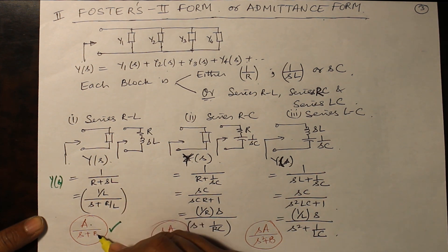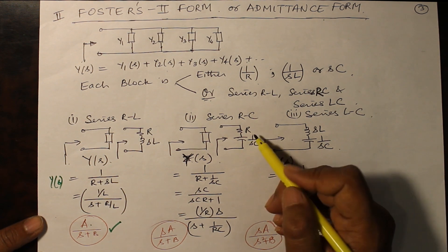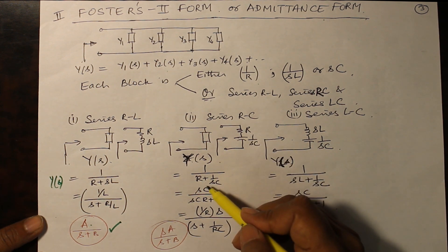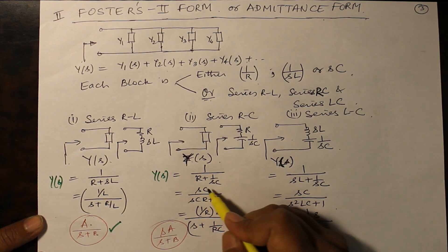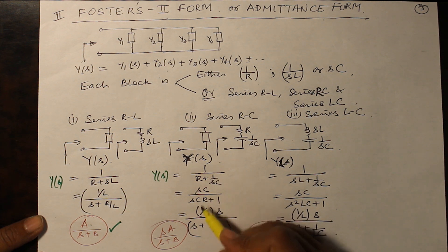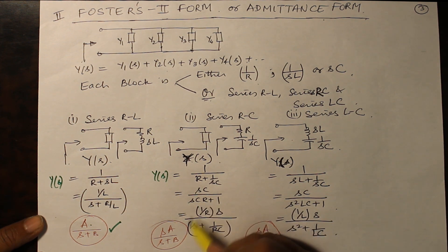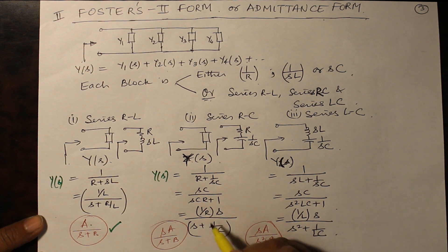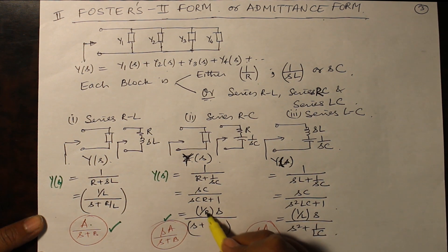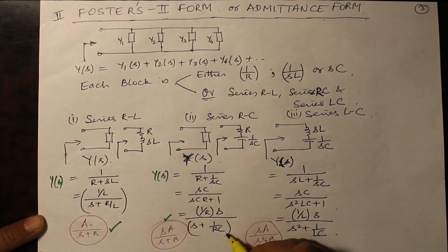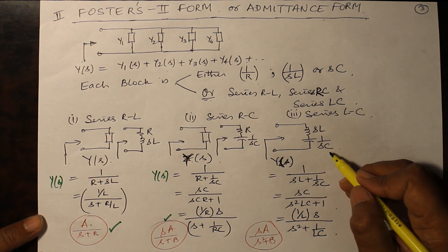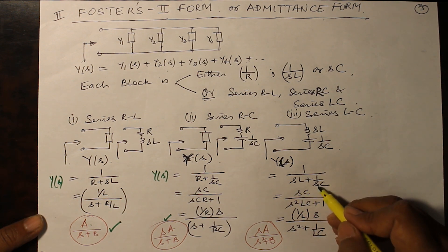For a series RC function, Z(s) equals R plus 1/SC. Taking the reciprocal gives Y(s) equals 1/(R + 1/SC). SC goes to the numerator with SCR plus 1 in the denominator. Taking out CR and simplifying gives (1/R)·S divided by S plus 1/RC, which is of the form SA/(S + B) where A equals 1/R and B equals 1/RC, from which R and C can be found. For a series LC network, Z(s) equals SL plus 1/SC, and taking the reciprocal gives Y(s).